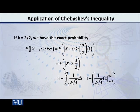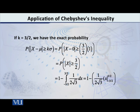This is the same as 1 minus the probability of |x| less than 3/2. When we are in this form, we can integrate in order to find the exact probability. So what do we get? 1 minus the integral from minus 3/2 to plus 3/2 of f(x) dx.